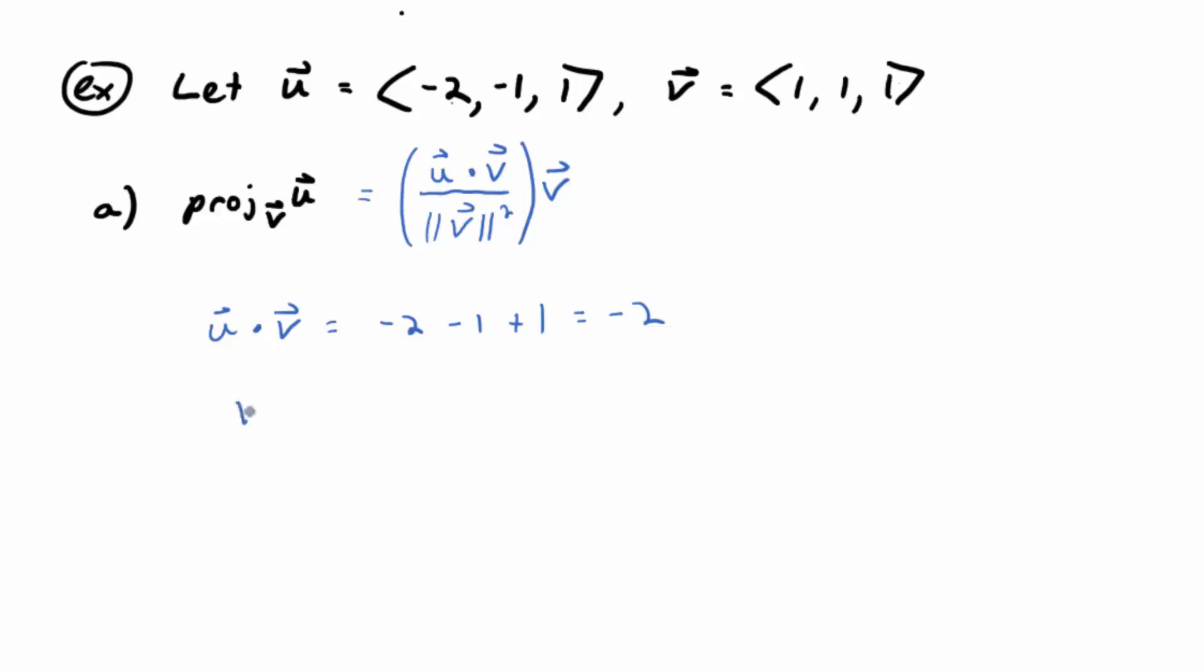And then magnitude v squared. So just find the magnitude and don't put down the square root, right? So what's that going to be? 1 squared plus 1 squared plus 1 squared plus 1 squared, 3?